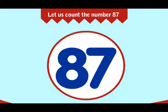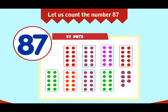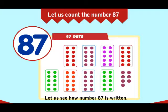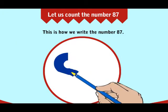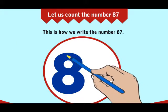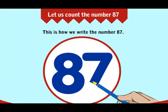This is the number 87. These are 87 dots. Let us see how number 87 is written. This is how we write the number 87, so we can read the number 87.